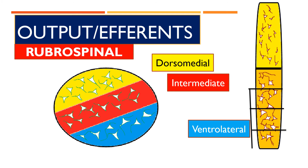Now moving to the output or efferent fibers. Taking a section of the caudal (magnocellular) part of the red nucleus, there are three different areas present: the ventrolateral aspect, the intermediate part, and the dorsomedial part. All three contain large-size multipolar neurons.